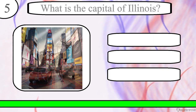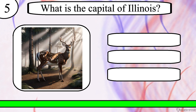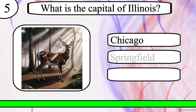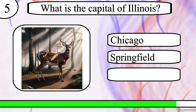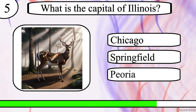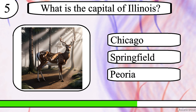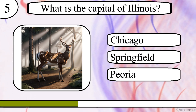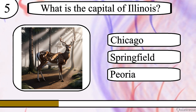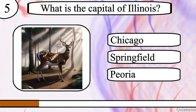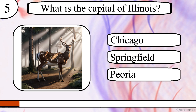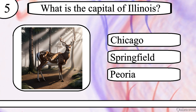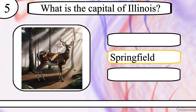Question 5. What is the capital of Illinois? Chicago, Springfield, or Peoria? The correct answer is Springfield.